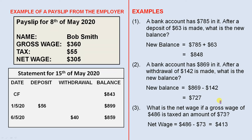What is the net wage if a gross wage of $486 is taxed an amount of $73? The net wage, which is the money you take home, will be $486 minus $73, which is $413.